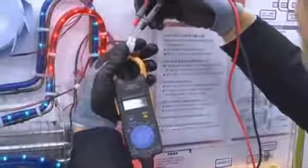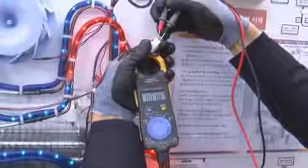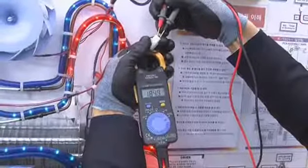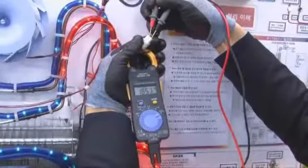Let us measure resistance at both ends of the defrost heater. Normal resistance of 185 ohms is observed.